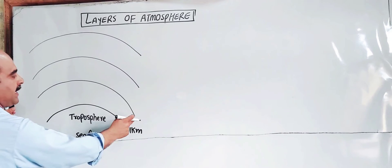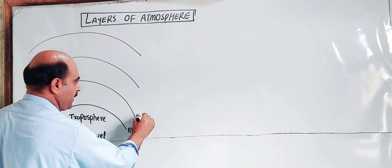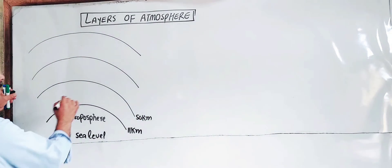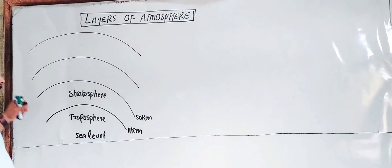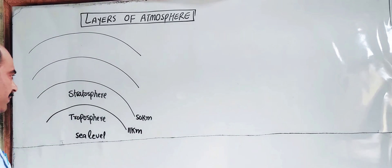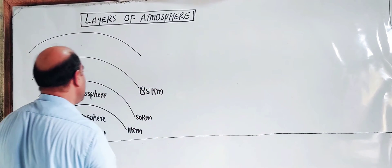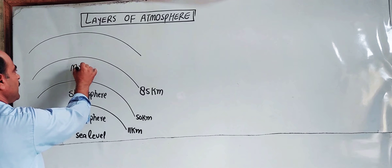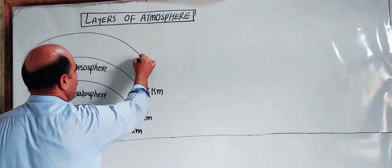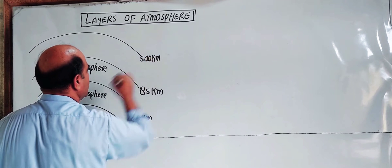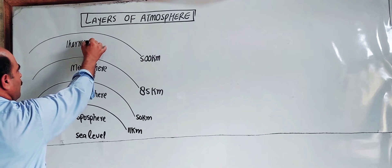The first layer is the Troposphere, from 0 to 11 km. From 11 km up to 50 km is the Stratosphere — the ozone layer is located in the stratosphere. From 50 km to 85 km is the Mesosphere. The Thermosphere extends up to 500 km.